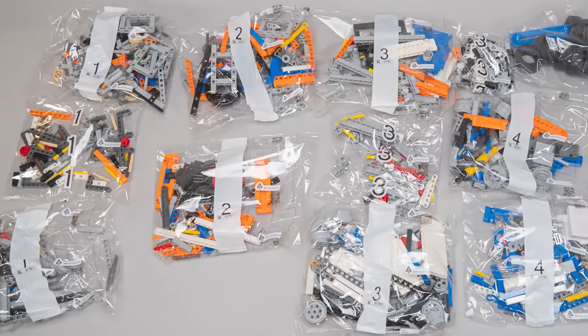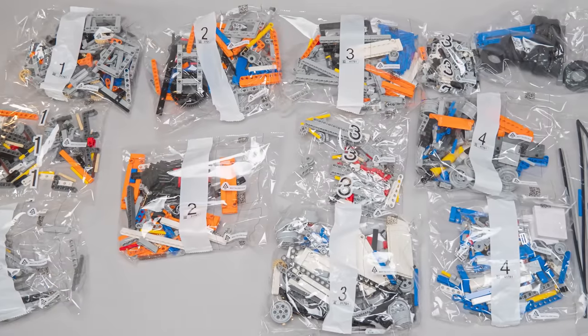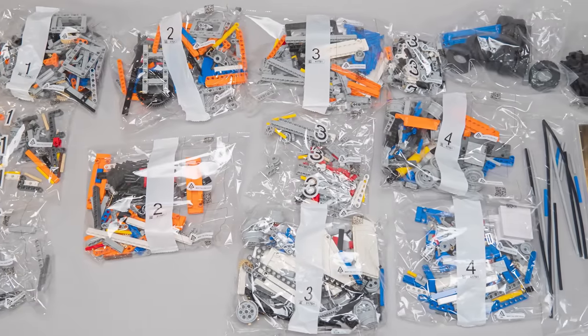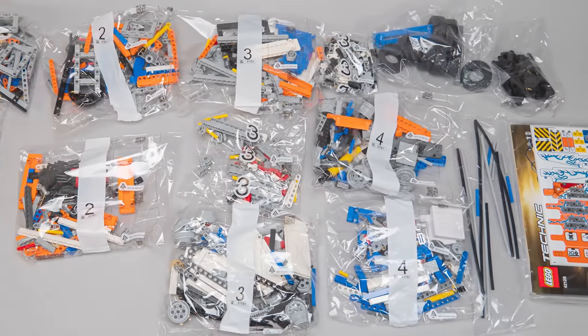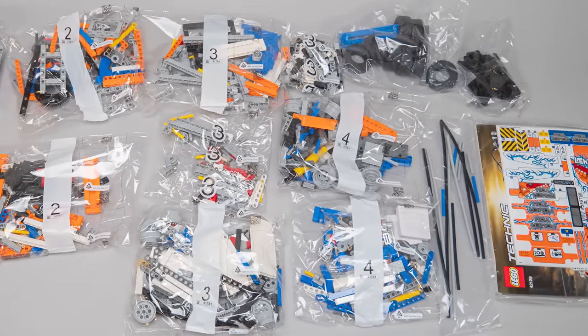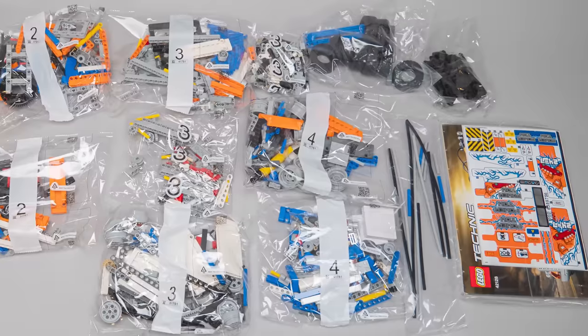We get 11 numbered bags and 3 unnumbered ones. Those have the new 11 module long flip flop beams, another with the tires and the boom parts, and one with the pneumatic hoses. The manual and the sticker sheet come together in a plastic bag.